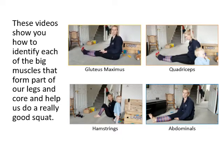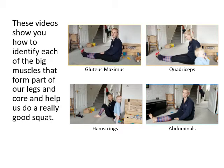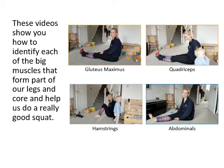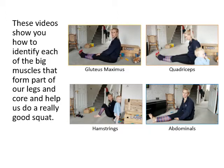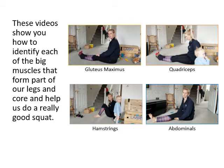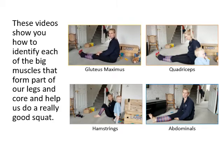The first big muscle we're going to engage when we do a squat is our gluteus maximus — our glutes — otherwise known as our bum. Sit on the floor nice and tall, and clench your bum so that you come up off the floor a little bit. Do it again. You should feel the muscles really tensing. You won't be able to do it for very long because it's quite hard.